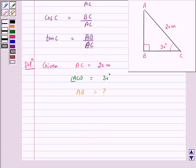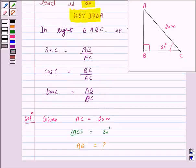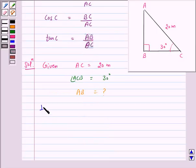Now to solve the given problem, we choose the trigonometric ratio which involves AC and AB. According to our key idea, either it is sin C or cosecant C, because cosecant C is equal to 1 over sin C, that is AC upon AB.